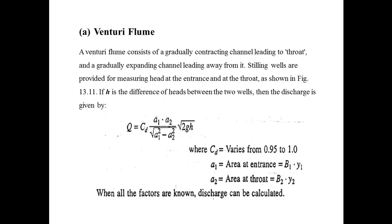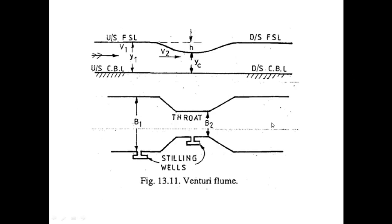The first one is the venturi flume. A venturi flume consists of a gradually contracting channel leading to throat and a gradually expanding channel leading away from it. Stilling wells are provided for measuring head at the entrance and at the throat as shown in figure 13.11. These stilling wells are provided at the start and at the throat in order to calculate the head at these points.